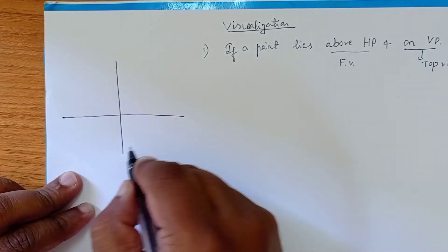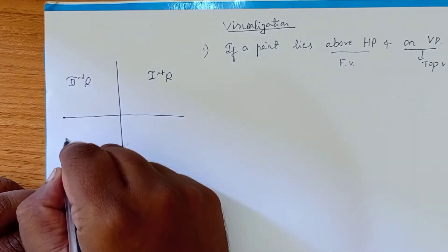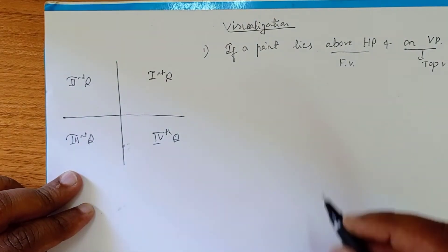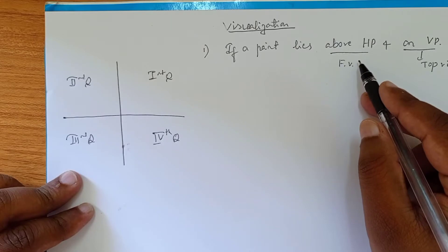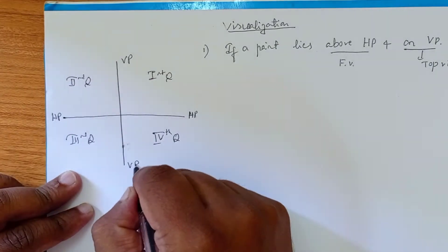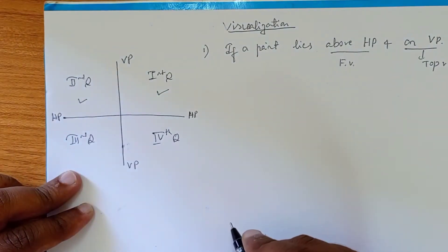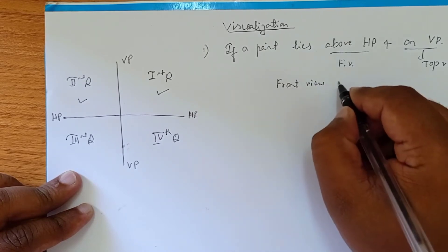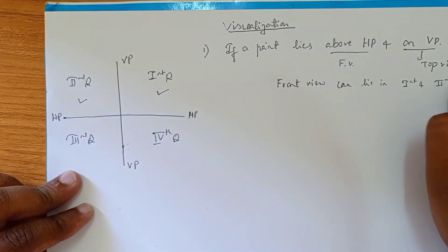In the quadrant system there are four quadrants: first, second, third, and fourth. If your point lies above HP, the HP plane is our horizontal plane. Above HP means our point's front view can lie in either the first quadrant or the second quadrant. So the front view can lie in the first and second quadrant.